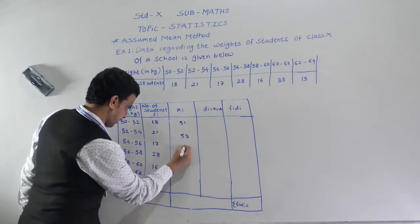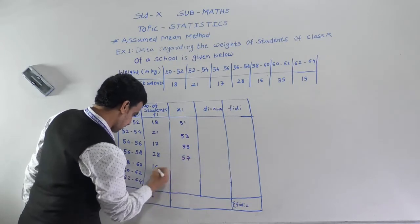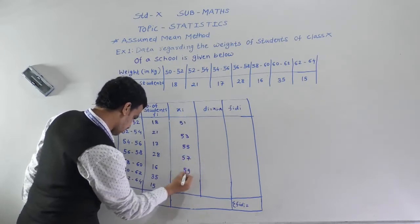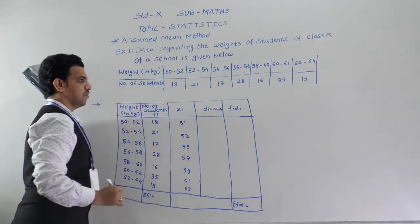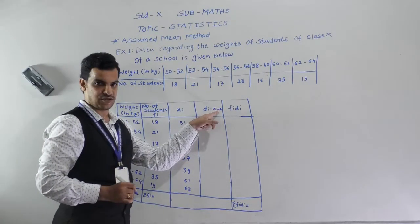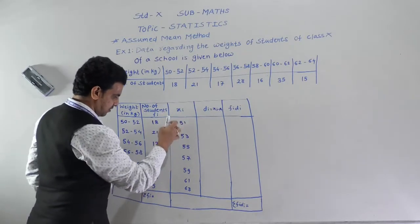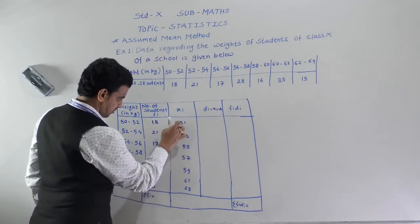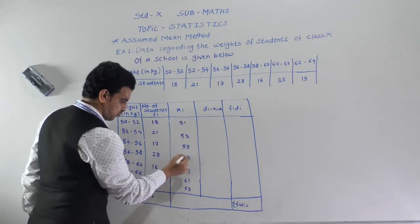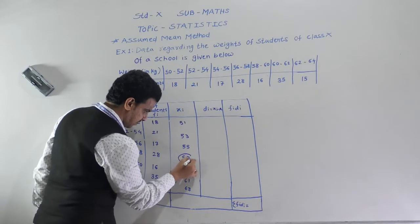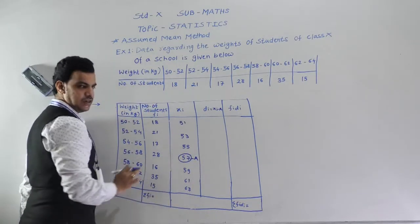The remaining class marks are 53, 55, 57, 59, 61, and 63. Since there is an odd number of observations, we take the middle observation as the assumed mean A. Here 57 is the middle observation, so we choose A = 57.